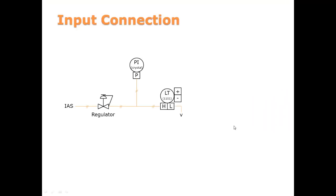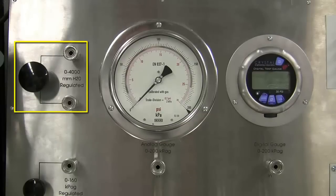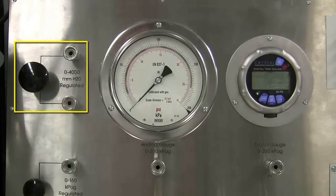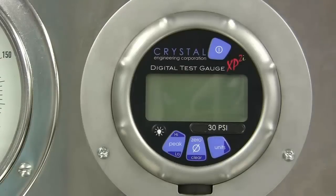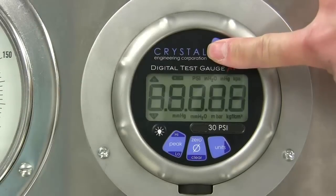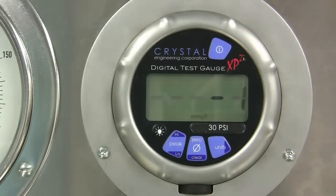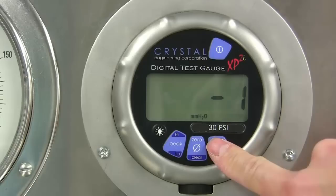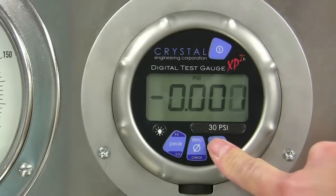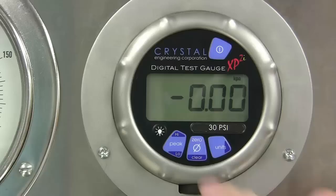We will now connect up the input side of the level transmitter. Recall that the output of the regulator is sent to the level transmitter and the pressure indicator. We will be using the zero to 4,000 millimeter H2O regulator, which has two output ports available. First power on the crystal gauge by holding down the power button. Then change the units to kPa. Then zero the gauge by holding down the zero button until you see a dash line.